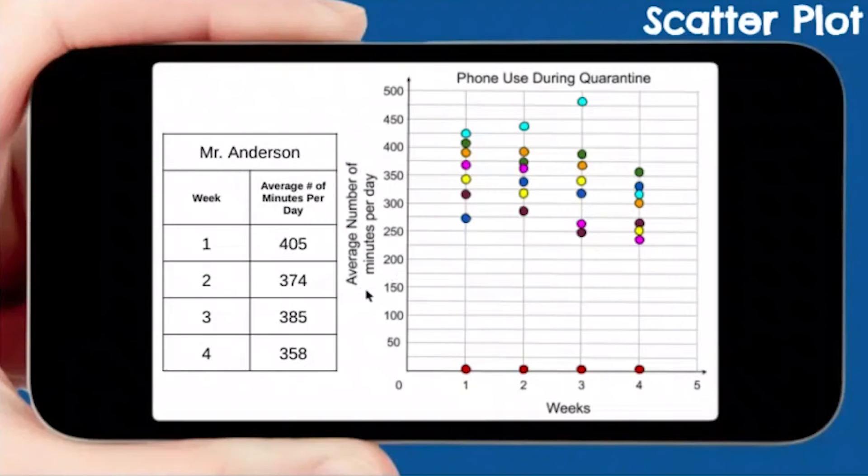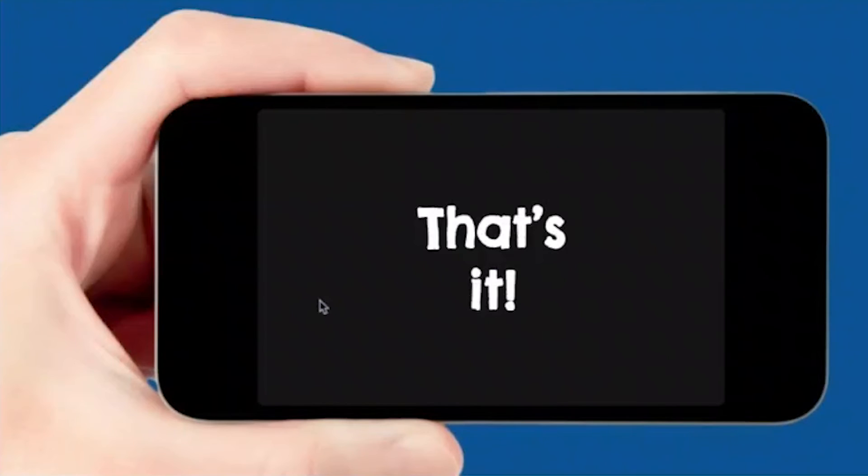Which leaves mine to be dark green. Week one, 405. Week two, 374. Week three, 385. And week four, 358. So that is basically it. Now you understand scatter plots and you can answer some questions that go with it. If you have any questions, please email your teachers. We are really wanting to help you, especially since this is brand new subject matter. Just let us know if you need help.